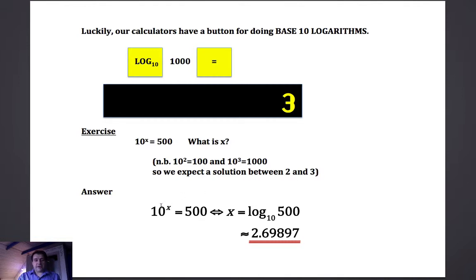Another way of writing that relationship: if 10 to the power of x is 500, then x is the logarithm to a base of 10 of 500. Our calculators do base 10 logarithms, so we just punch that into our calculator: log of 500. And it's about 2.7, so 10 to the power of about 2.7 gives you 500.